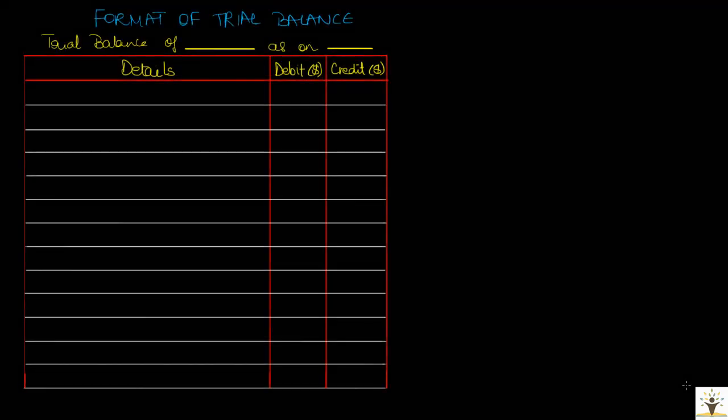Let us try making a trial balance for Andy's business on 31st January from our previous example. We shall consider each account one by one and all accounts having either a debit balance or a credit balance will be recorded here. Let us start with the cash account.